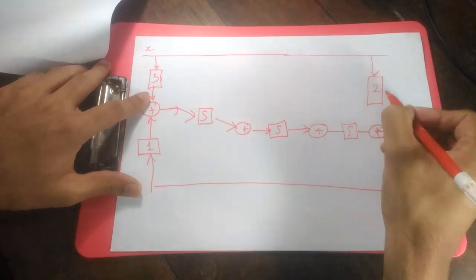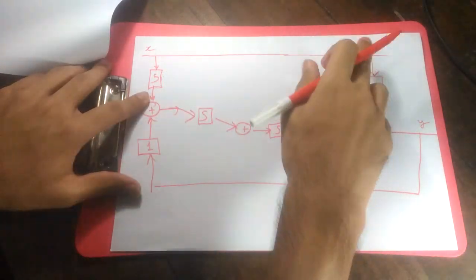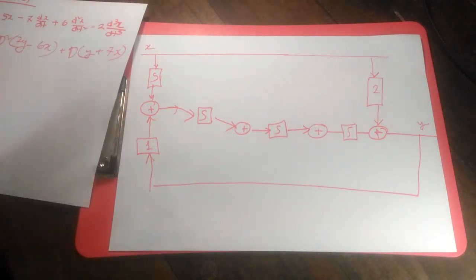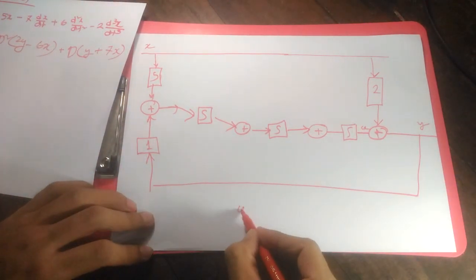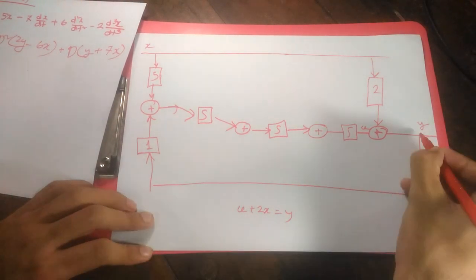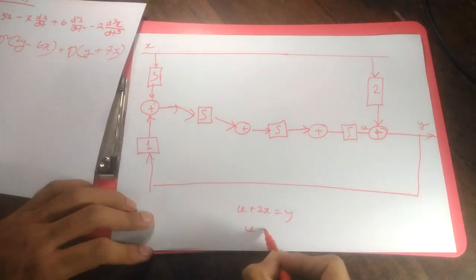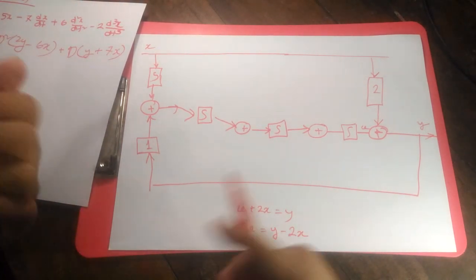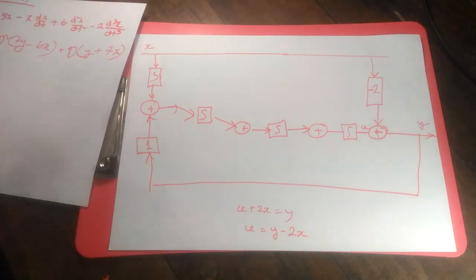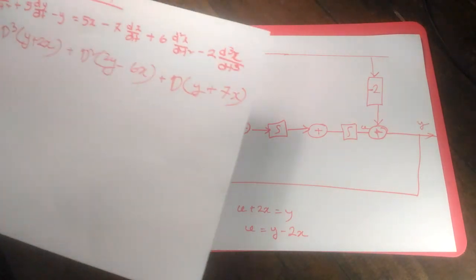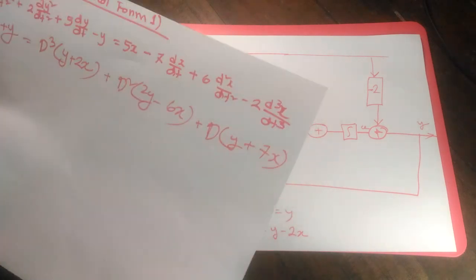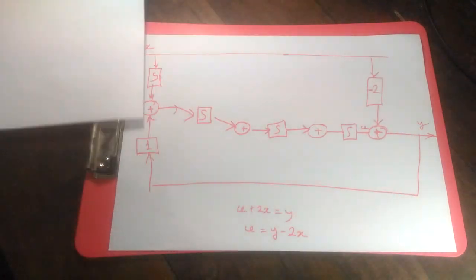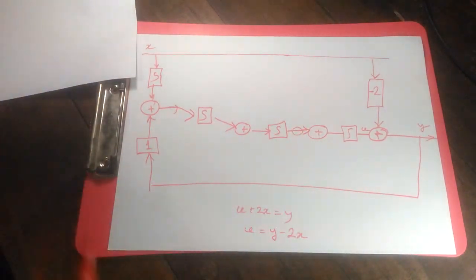Let's call the first junction U. Then U + 2X = Y, which gives U = Y − 2X. We don't want positive 2, so there is a sign reversal — the coefficient becomes minus 2. For the d² junction, the value needs to be 2Y − 6X. Let's call this junction V and evaluate it carefully.